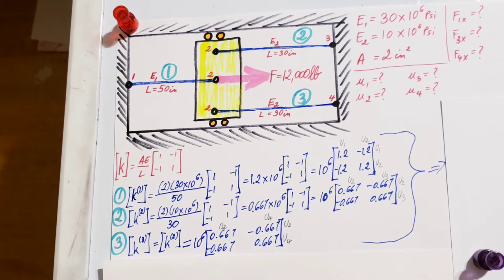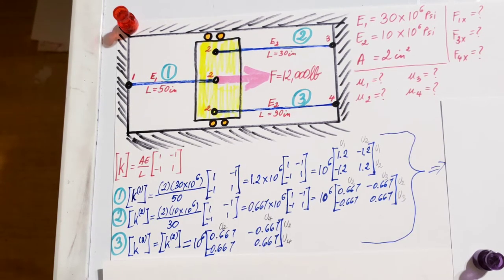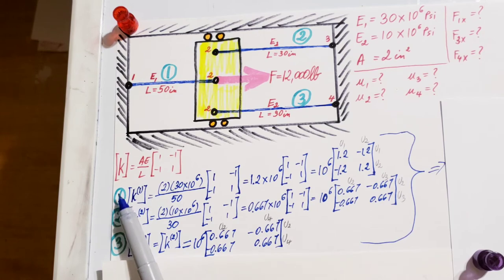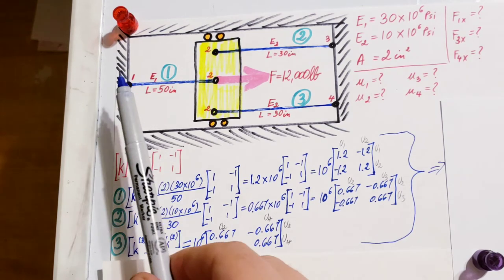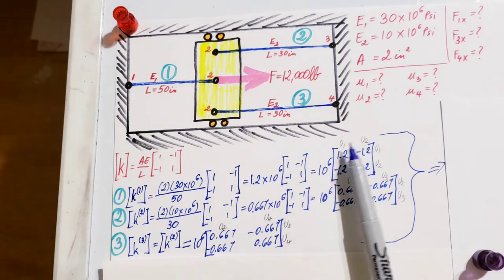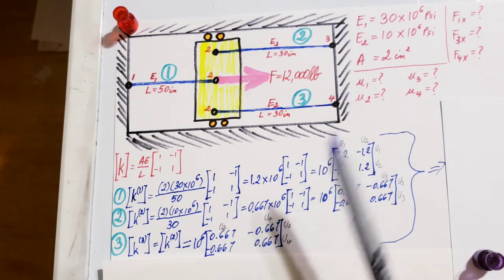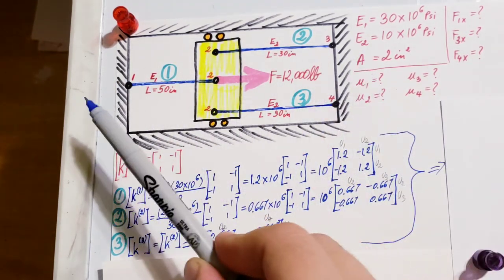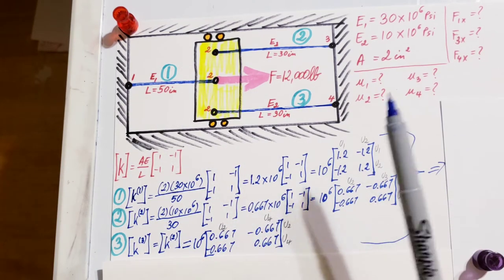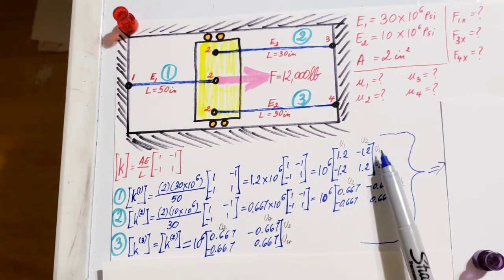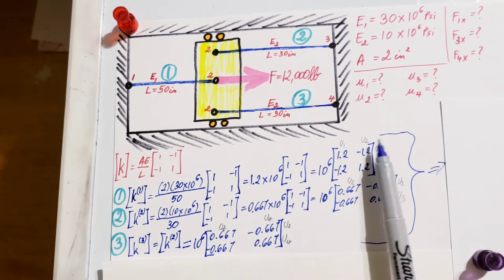Another useful thing is marking information that belongs to each local stiffness matrix. Element 1 is bordered by nodes 1 and 2. I write this information next to it: displacement u1 and u2. We're working in just one dimension, everything is in the x direction.